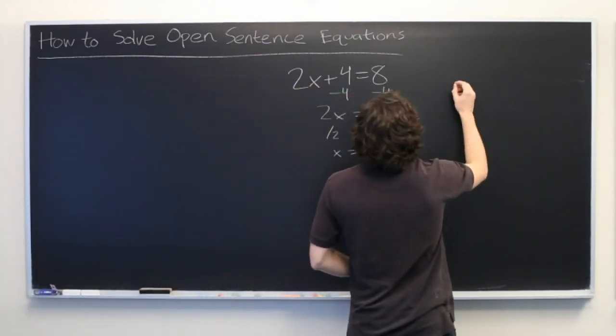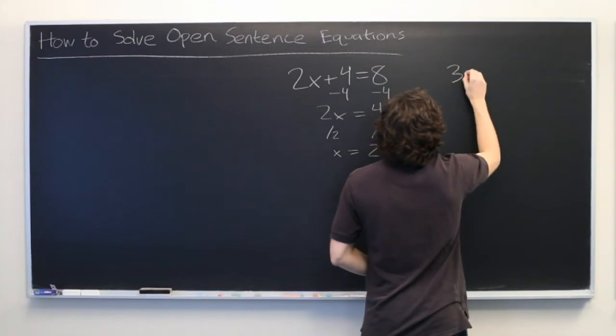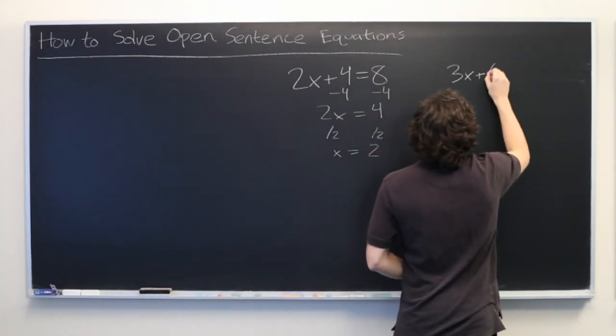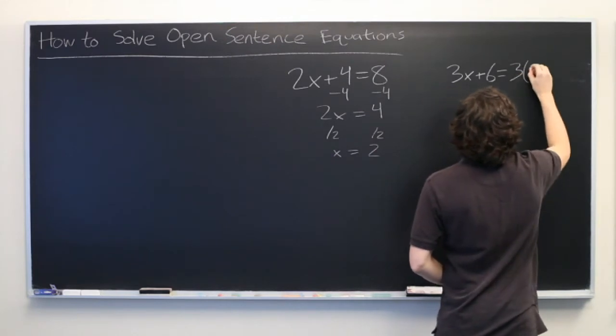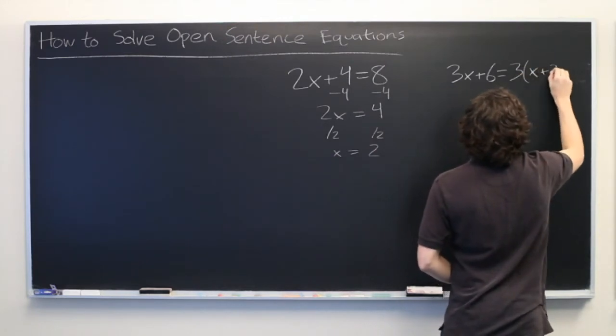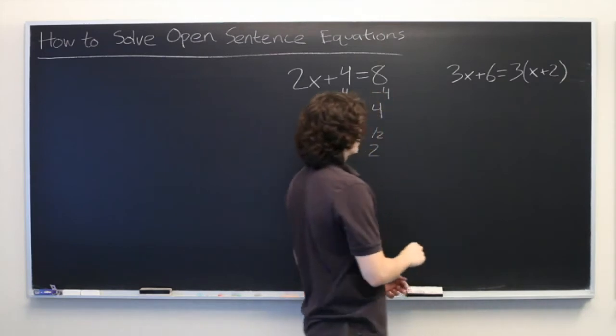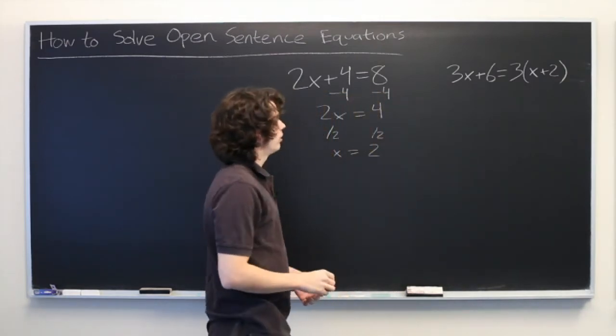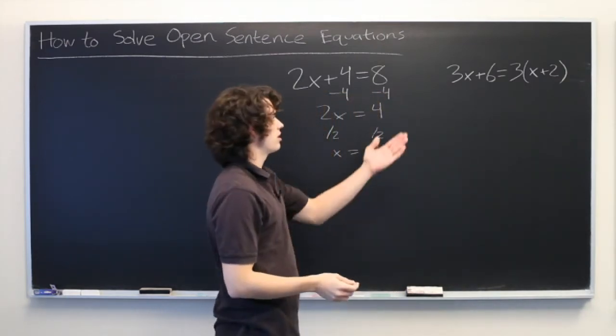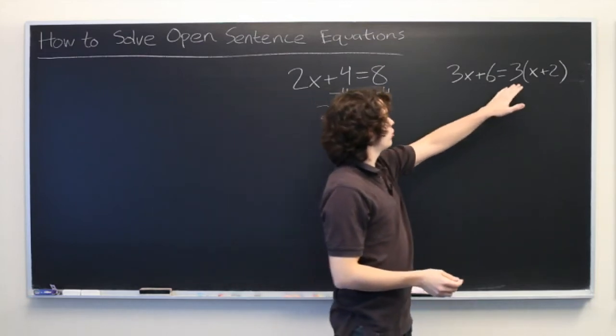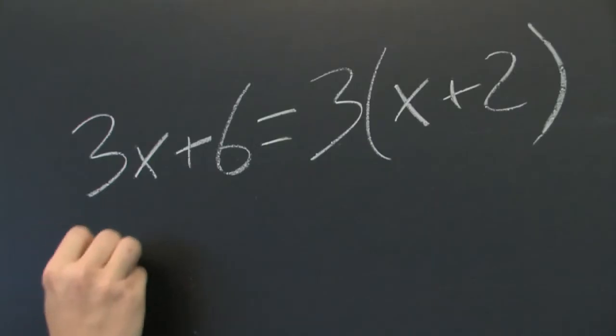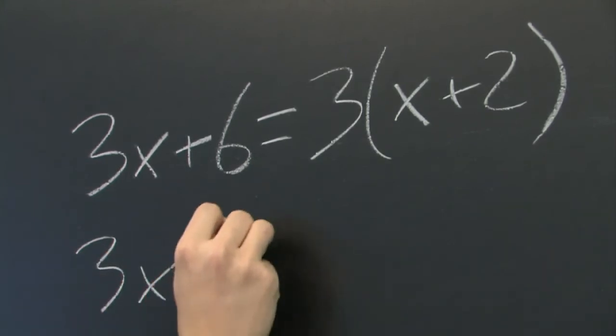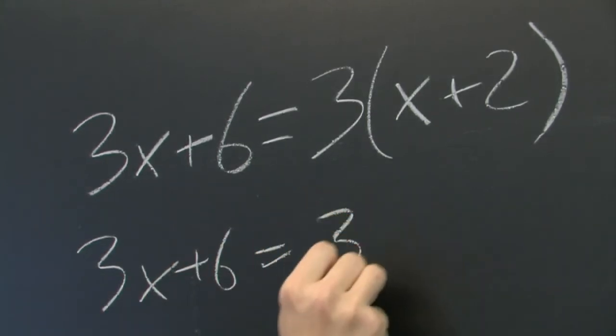Let's say we have something like 3x plus 6 equals 3 times x plus 2. Well, the first step, any time you have something inside parentheses, is to distribute the coefficient in front. So we get 3x plus 6 equals 3x plus 6.